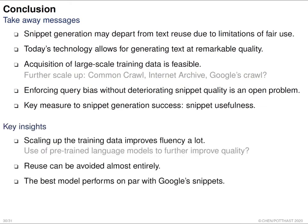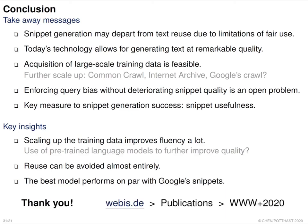Here are the key insights. First, sufficient training data improves the fluency of generated text. Second, our abstractive snippet generator produces text without reusing text from the original web page. Finally, the best-performing model performs similarly to Google snippets. Thank you very much for attending. You can find all our resources on our website, and I am happy to answer your questions.